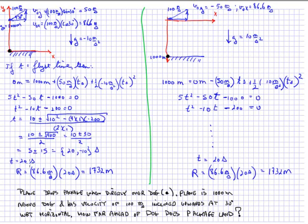so I'm going to take the 20 second flight time, and that means that the range of the package, which is what they're really asking for here, is the x velocity while it's in flight, 86.6 meters per second times 20 seconds, which is 1732.